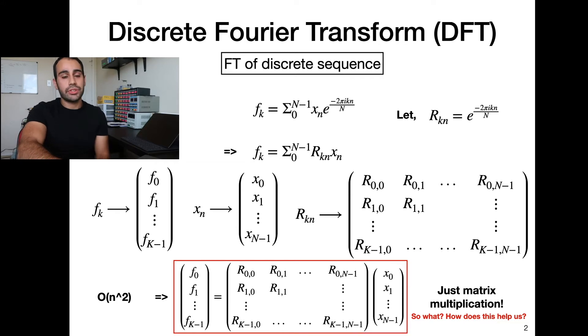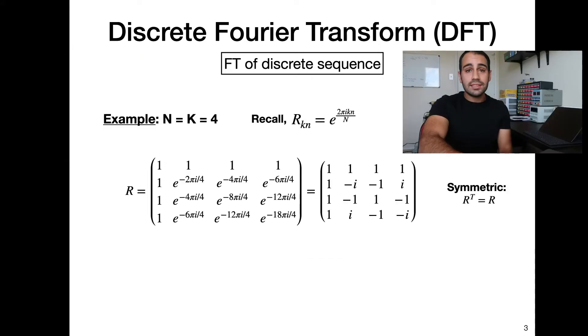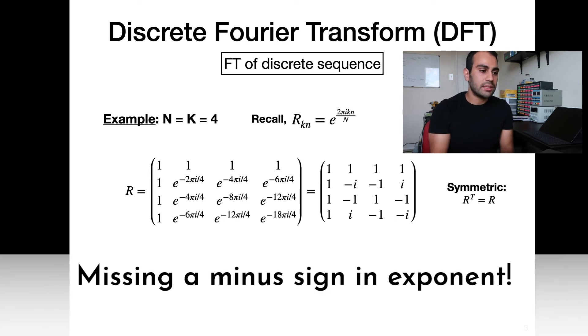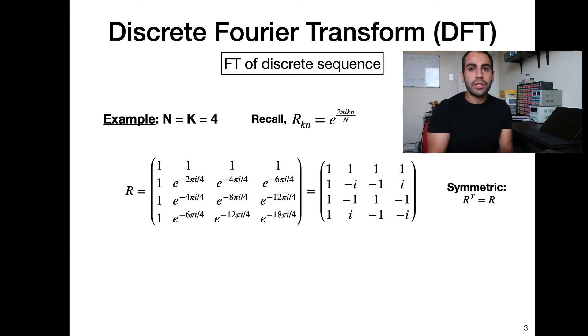So we converted our discrete Fourier Transform to matrix multiplication. Didn't seem entirely useful, but let's just consider a concrete example. Let's assume the case where big N equals big K. We recall that big R sub kn equals e to the 2 pi i k n over big N. And then we can just plug it in. We plug in k and n, which correspond to the indices of our matrix. Big N equals 4. So we plug in those values, and we get this matrix on the right here.